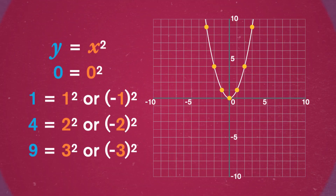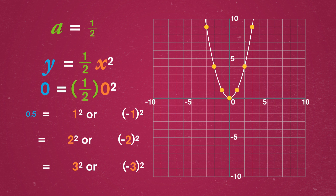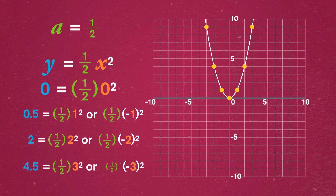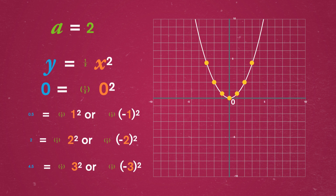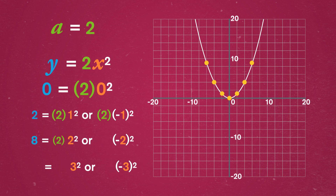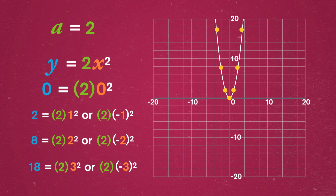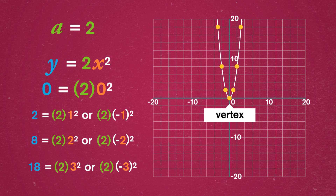But what happens to the graph if we have an a that's different from 1? If a equals one-half, the y values will only be half of what they were before, and the parabola is shallower and wider. And if a equals 2, then the y values will be twice what they were before, and the graph will look narrower and steeper. You can think of messing with the a coefficient as adjusting the arms of the parabola: smaller a values force the arms to lay flatter, while larger a values bring the arms up closer together. Throughout all these adjustments, the vertex stays at zero and remains at the lowest point.